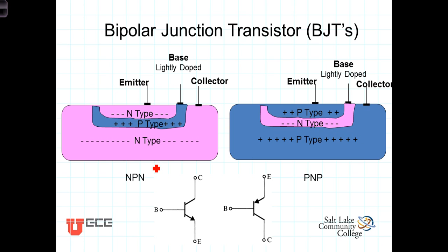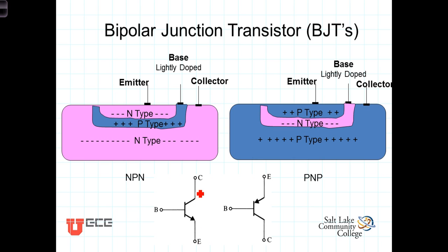In the NPN transistor, negatively charged electrons act as the majority charge carriers and flow from the emitter through the base into the collector. The emitter terminal is noted with an arrowhead pointing in the direction of conventional current flow. Although electrons flow from the emitter through the base to the collector, the conventional current is referenced flowing from the higher-voltage collector to the emitter.